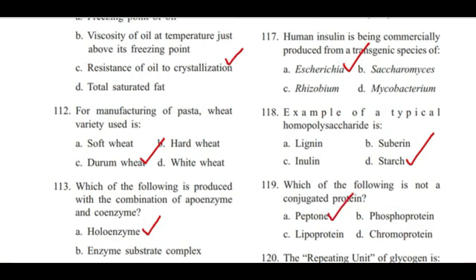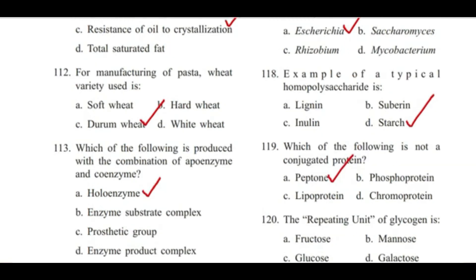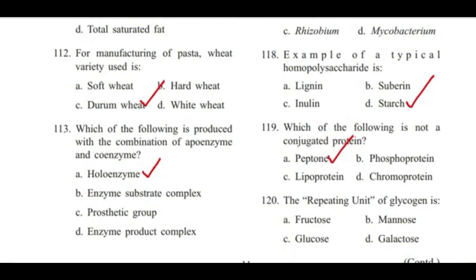Question 120: The repeating unit of glycogen is — fructose, mannose, glucose, or galactose? Answer is C, glucose.